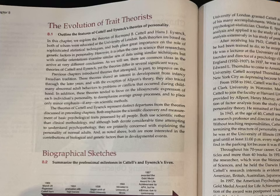The theories of Cattell and Eysenck represent distinct departures from preceding theories. Both emphasize the scientific discovery and measurement of basic psychological traits possessed by all people. Both use scientific rather than clinical methodology, and although both devote considerable time to psychopathology, they are primarily concerned with explaining the personality of normal adults. Both are more interested in biological and genetic factors than in developmental events.